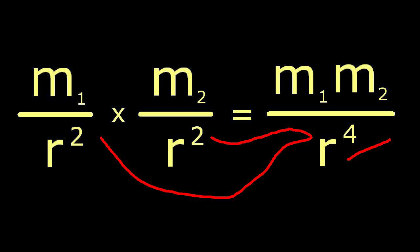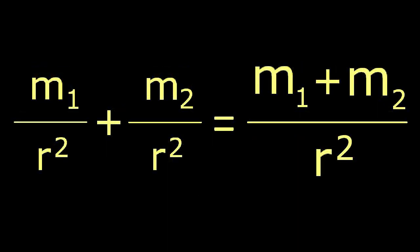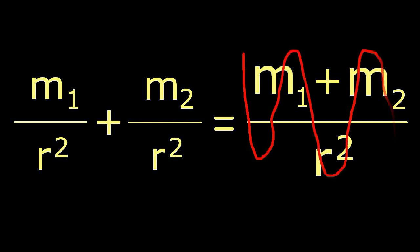The rules of algebra require that we multiply both the top and the bottom of a fraction to get the correct answer. So, if we want to keep r squared in the denominator, we must add the numerators, which also does not produce Newton's equation.